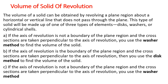If the axis of revolution is not a boundary of a plane region and the cross sections are taken perpendicular to the axis of revolution, you use the Washer method to find the volume. If the axis of revolution is the boundary of a plane region and the cross sections are taken perpendicular to the axis of revolution, you use the Disk method.